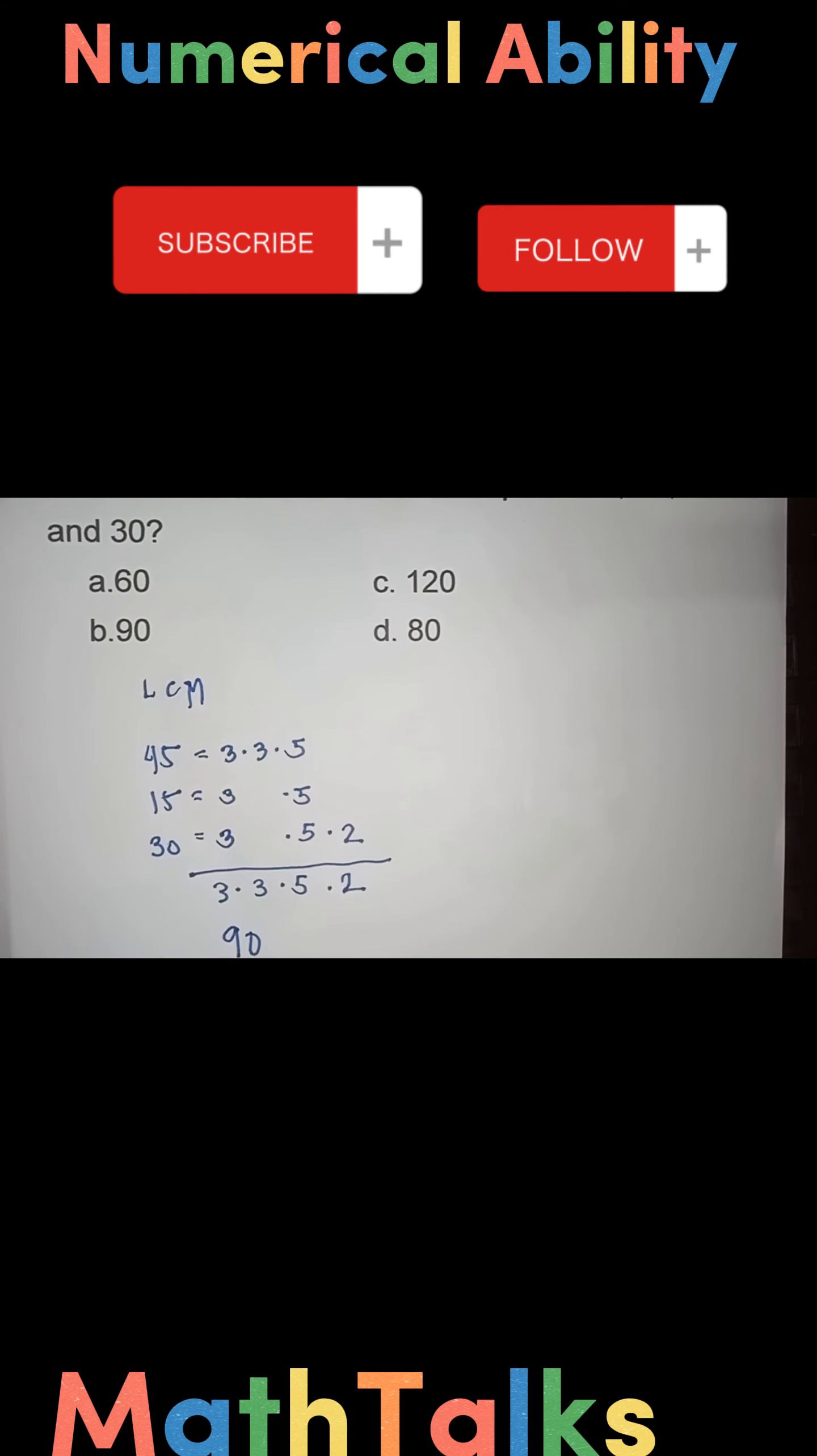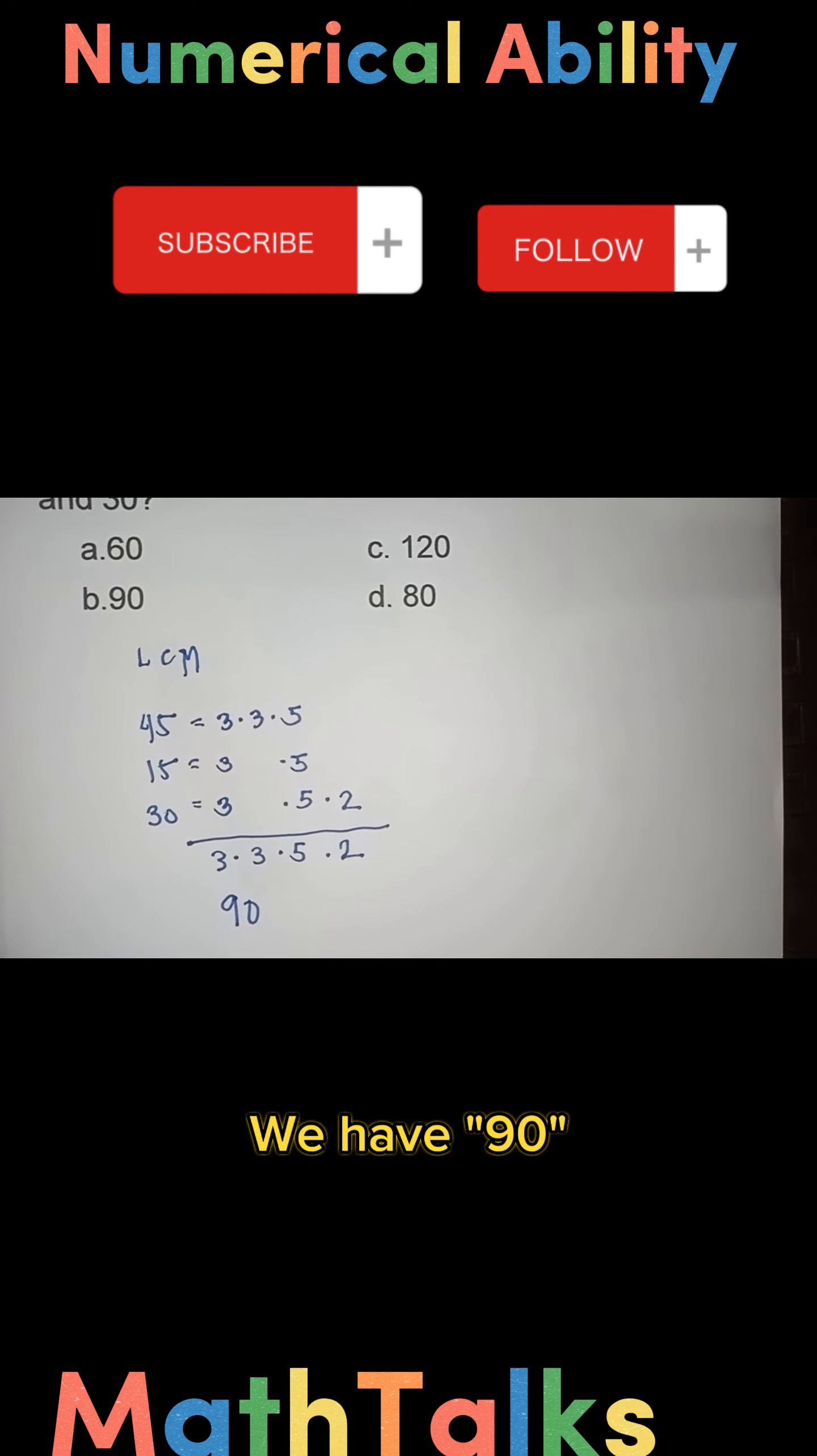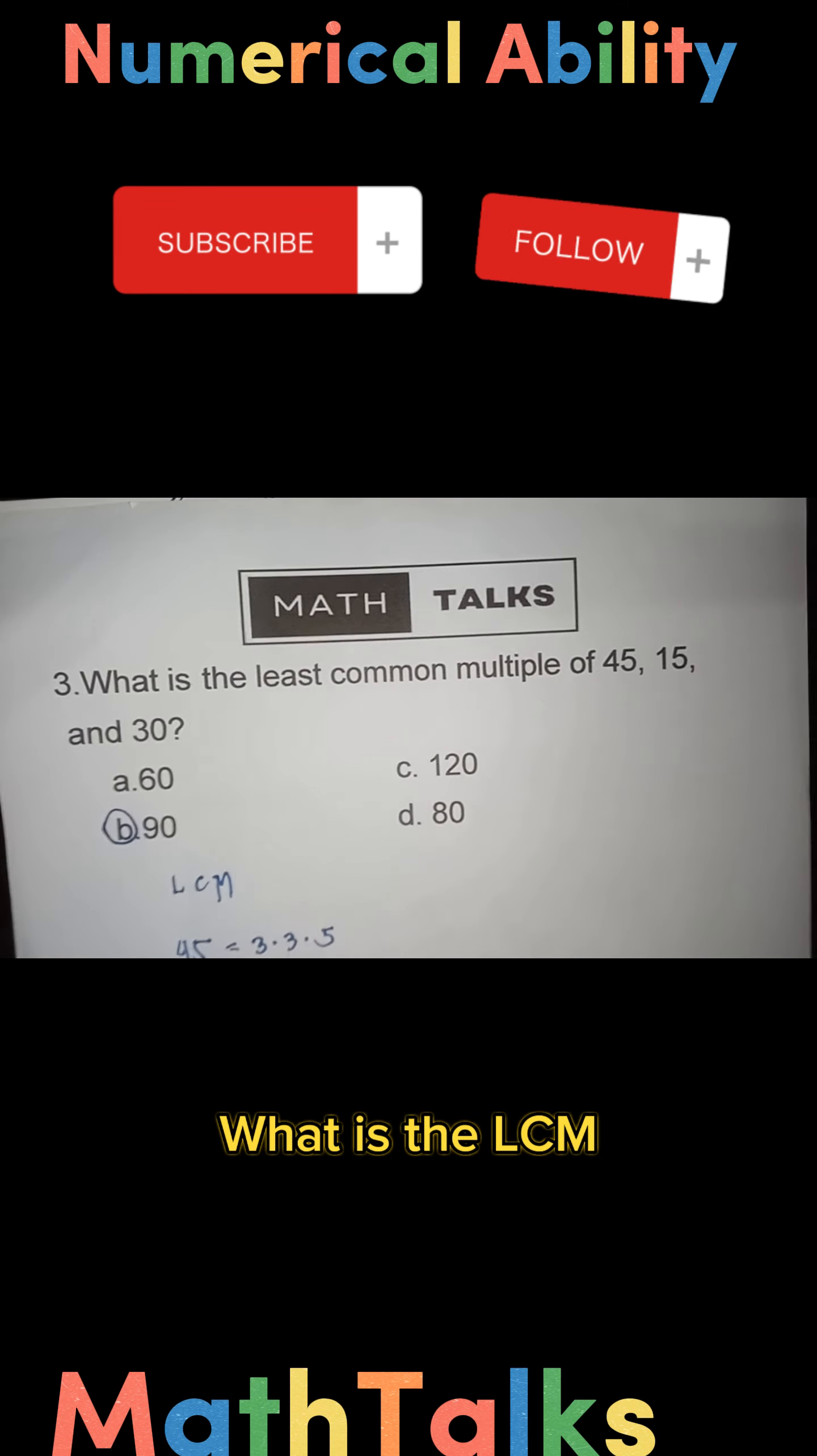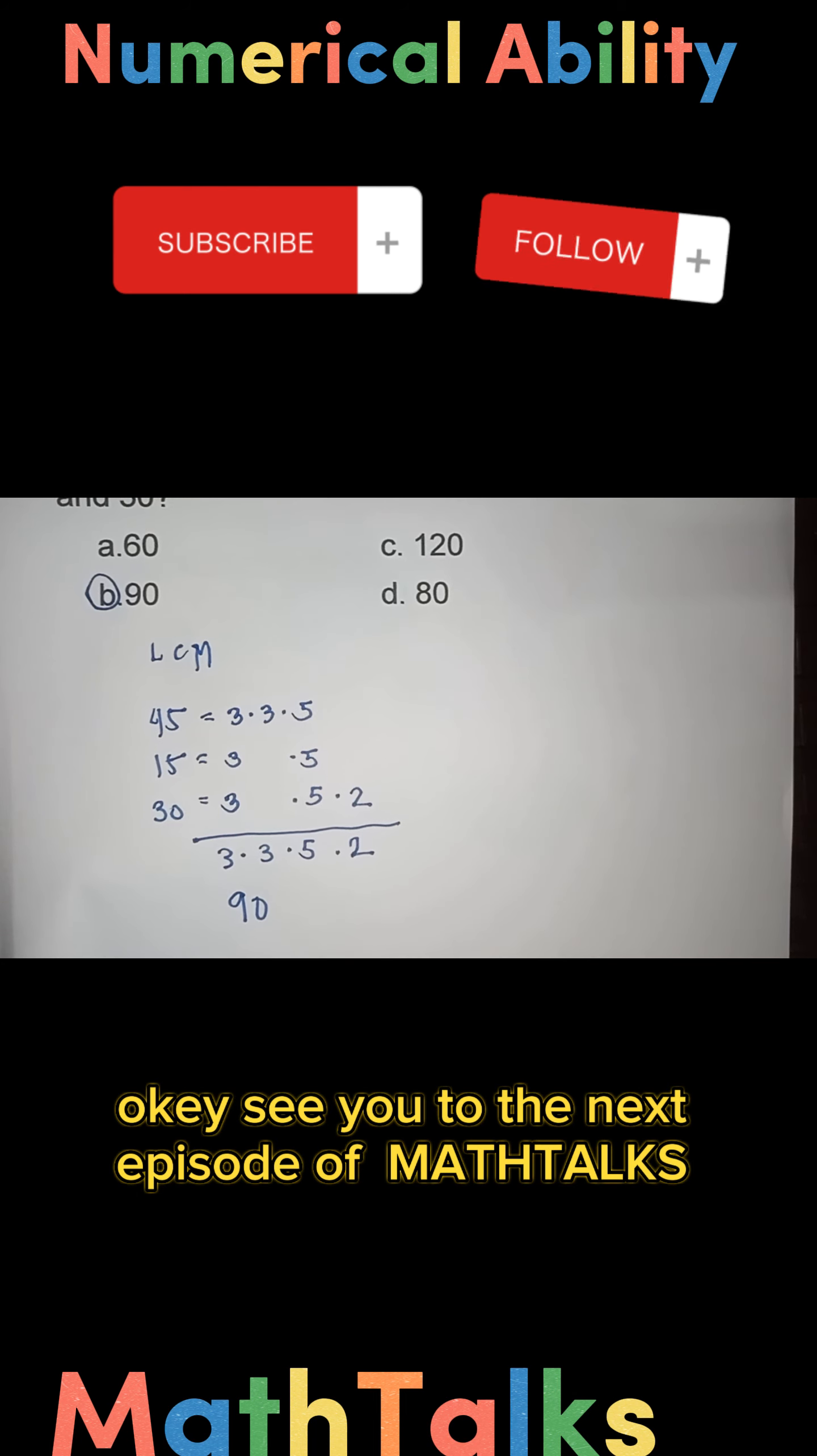With regards to 45, 15, and 30, in finding the LCM we have 90. So the answer is letter B. What is the LCM? Our solution is complete.